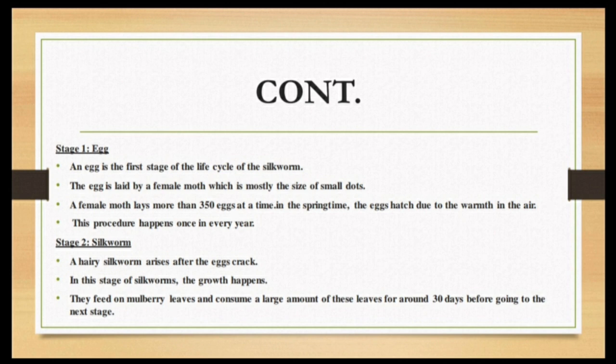Stage 1: Egg. An egg is the first stage of the life cycle of the silkworm. The egg is laid by a female moth and is mostly the size of small dots. A female moth lays more than 350 eggs at a time in the springtime. The eggs hatch due to the warmth in the air, and this procedure happens only once a year.